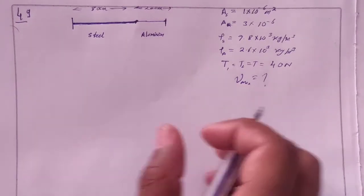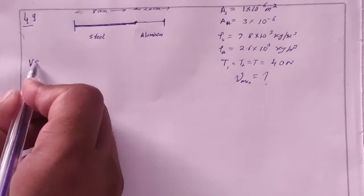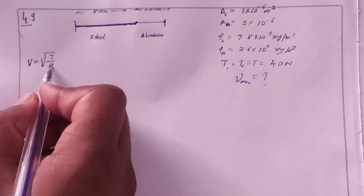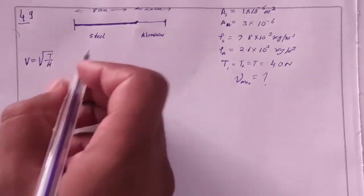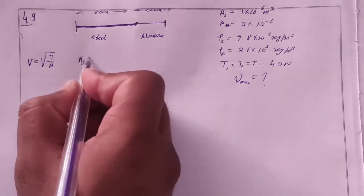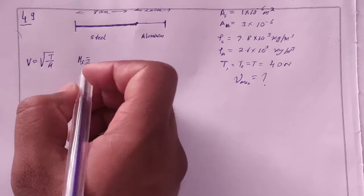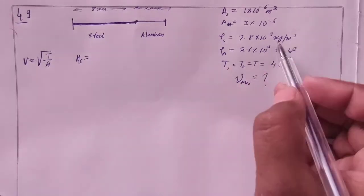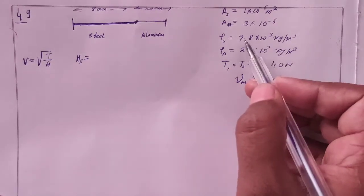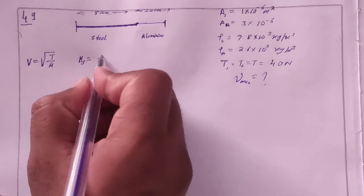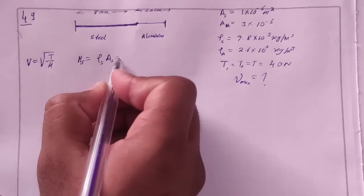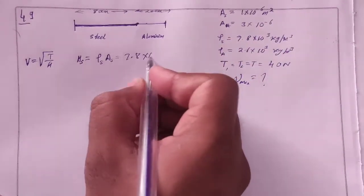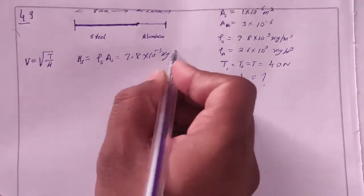First of all, if we look at speed, the speed is root T by mass per unit length. If we look at mu, mu steel, the mass per unit length for steel, is density times area of steel. So this is 7.8 into 1 into 10 to power minus 6. This equals 7.8 into 10 to power minus 3 kg per meter.